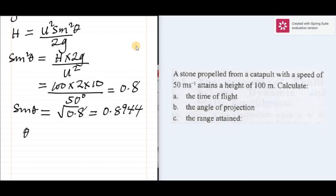To find theta, the angle of projection will be the sine inverse of 0.8944. Approximately, the sine inverse of that is 63 degrees.